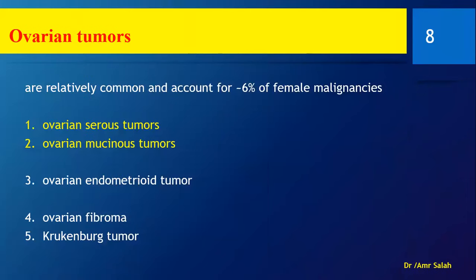MRI would weigh one option against the other more, but of course the definitive diagnosis is always by pathology. It is very important that we identify this clinically and know it is a tumor — we have to tell the patient. The most common ovarian tumors we will encounter are serous tumors, mucinous tumors, and to a lesser extent endometrioid tumors and ovarian fibroma.